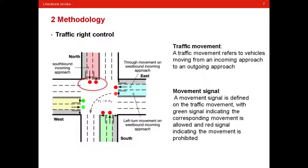And when it comes to traffic signal, there is a definition of movement signal. A movement signal is defined on the traffic movement, with green signal indicating the corresponding movement is allowed and red signal indicating the movement is prohibited.